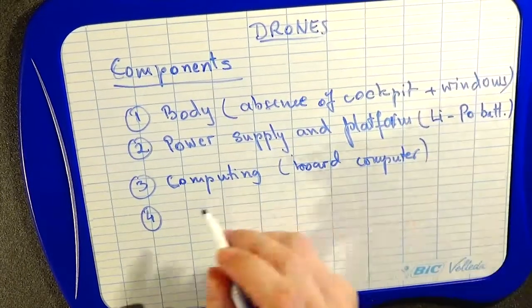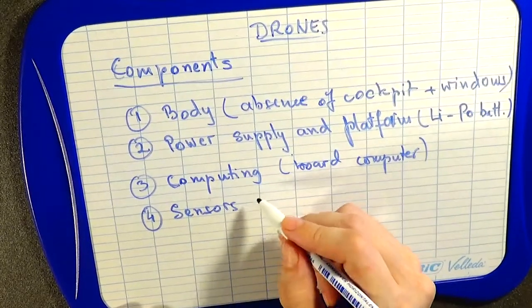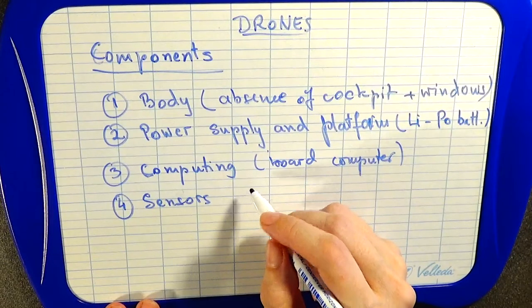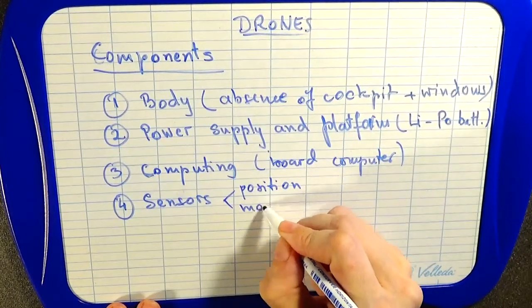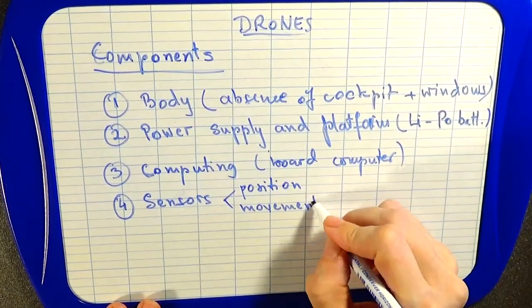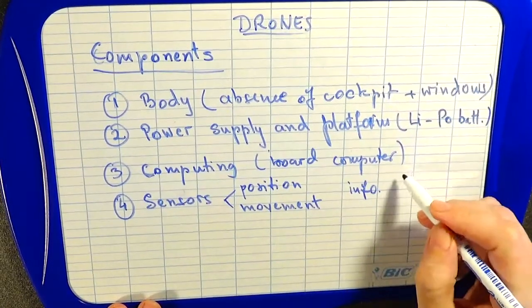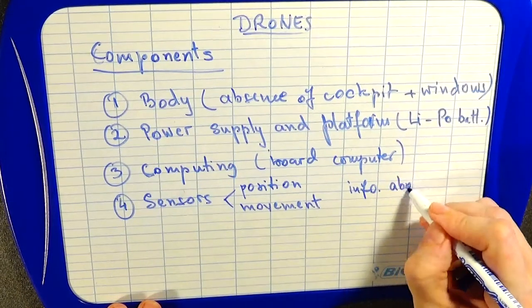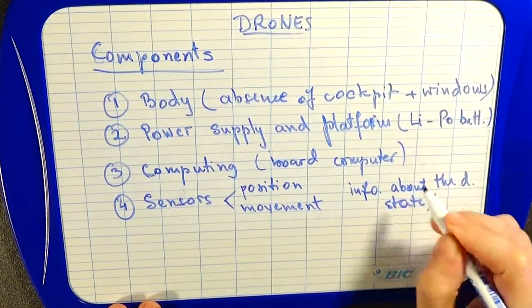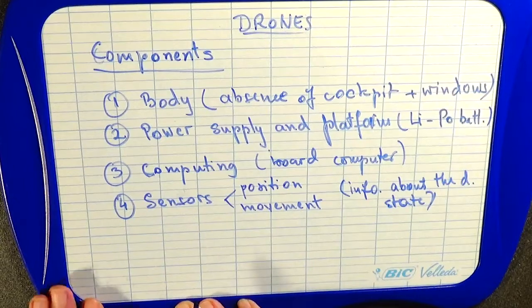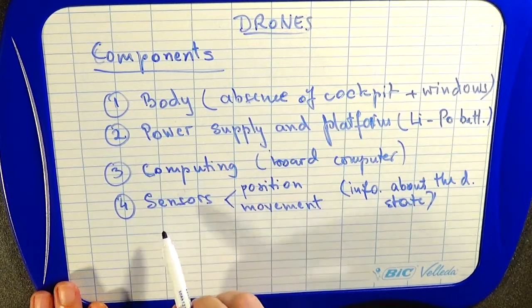As an example, they also have sensors for position information that gives information about the drone state, for example to avoid collision.